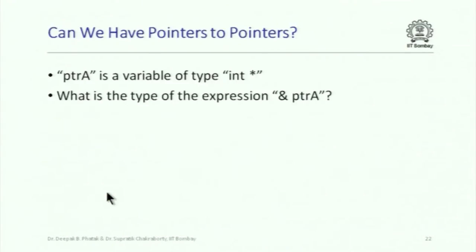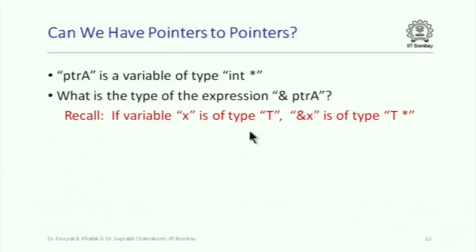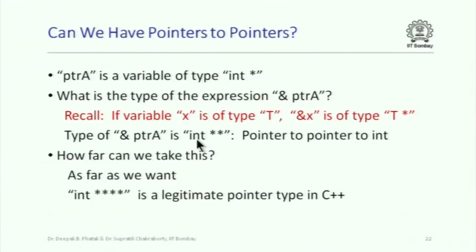Can we have pointers to pointers? If ptrA is a variable of type int*, then &ptrA would be a pointer to a pointer to an integer. Applying the rule that if X is of type T then &X is of type T*: &ptrA would be of type int**. This is how we represent a pointer to a pointer to an integer. We can take this as far as we want — int**** is also a legitimate pointer type, representing a pointer to a pointer to a pointer to an integer pointer.